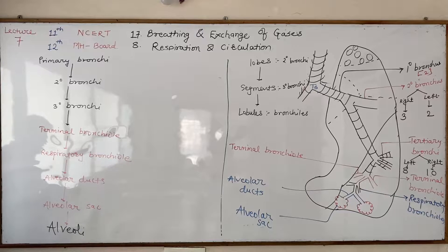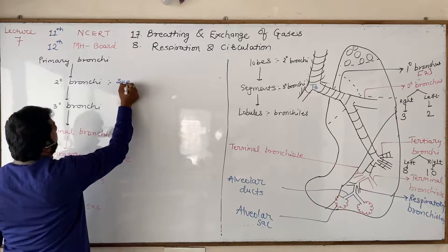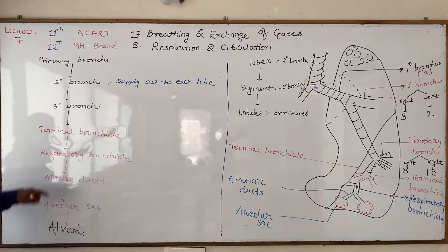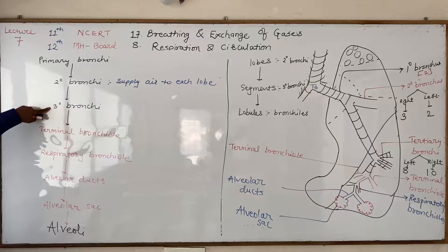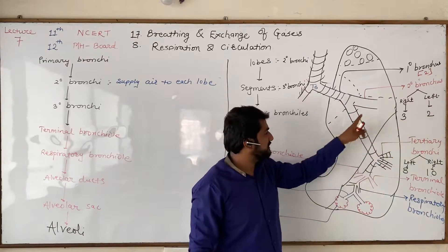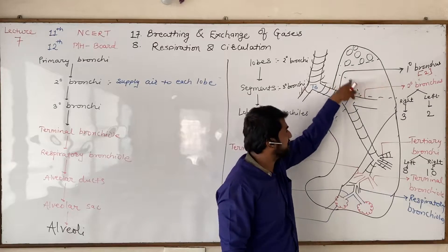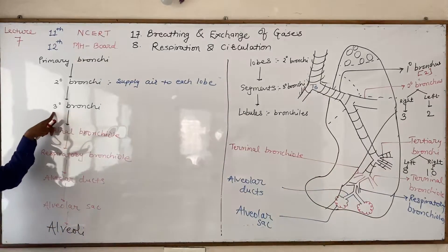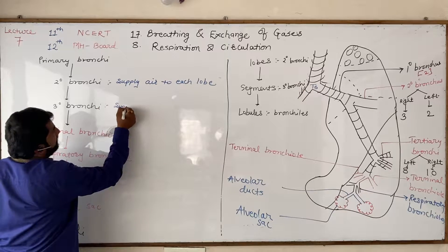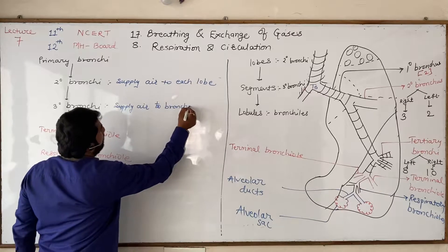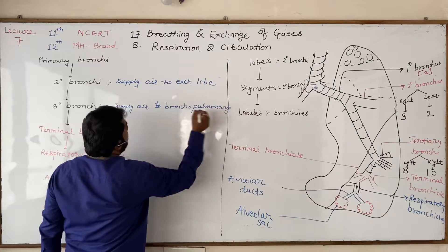The secondary bronchi supply air to each lobe of the lung. The tertiary bronchi supply air to the bronchopulmonary segments. For example, the left lung is divided into two lobes, and lobes are further divided into segments — these smaller parts are called segments.